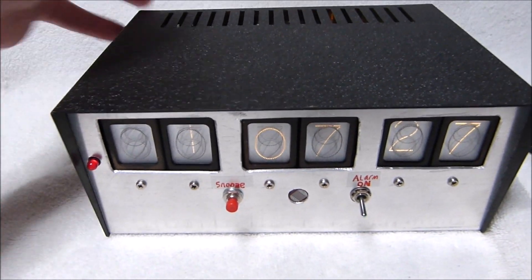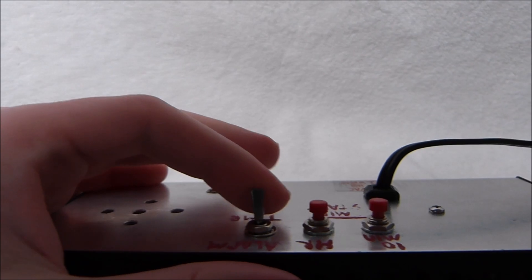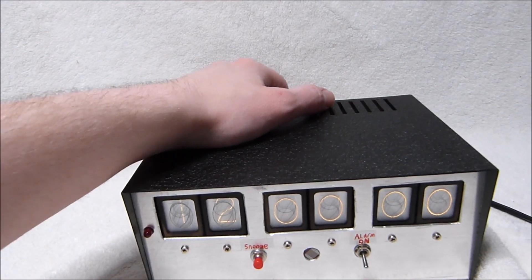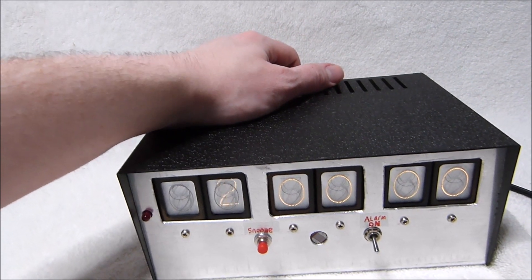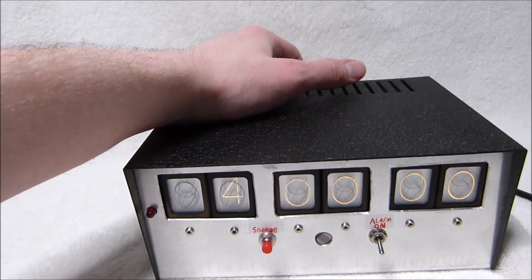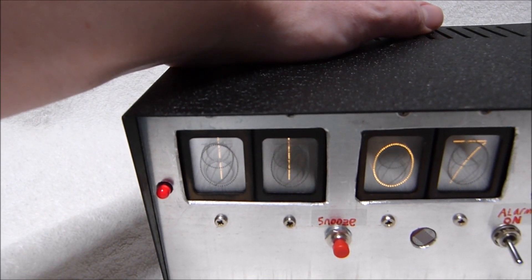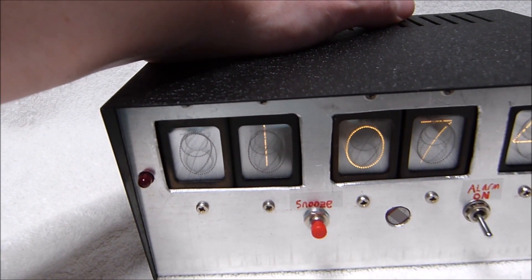I'll demonstrate the alarm feature real quick. So to set the alarm time, you just flick the switch over to the alarm position and then set it to the time you want. Let's say, I don't know, 5 a.m. And I'll bring the regular time close to 5 a.m.